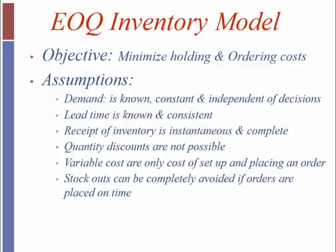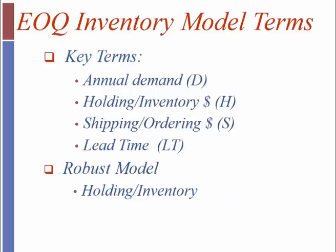The EOQ model, economic order quantity, of course the objective is to minimize holding and ordering costs. It's based on these assumptions: that demand is known and constant and independent of other decisions, that lead time is known and consistent, that receipt of inventory is instantaneous and complete. Quantity discounts are not possible. You pay exactly the same price for every item. Variable costs are only that of setup and placing an order. And stock outs can be completely avoided if we place our order on time. It's important to understand that in reality, it is unlikely that all of those things will exist, but components of them will indeed exist.